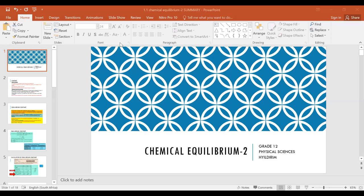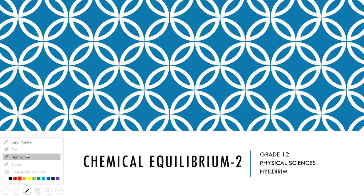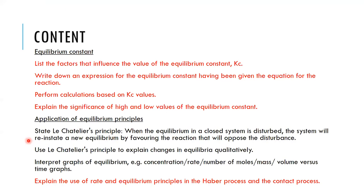Today we are going to talk about chemical equilibrium, Part 2. In the first part we talked about chemical equilibrium, the factors affecting it, and looked at graphs. Now we are going to talk about Kc — the chemical equilibrium constant — and the list of factors that influence the value of the equilibrium constant.